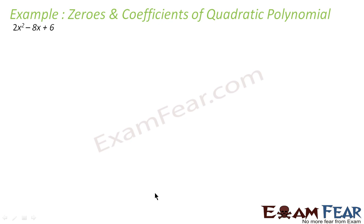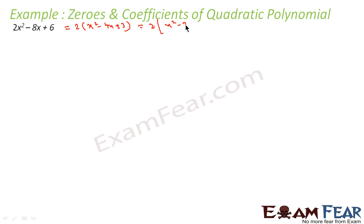Let's assume the function is 2x² − 8x + 6. We can write this as 2(x² − 4x + 3). Factorizing: −4 = −3 + (−1) and (−3)(−1) = 3. So this becomes 2(x − 3)(x − 1).